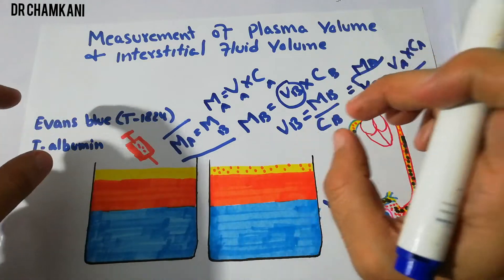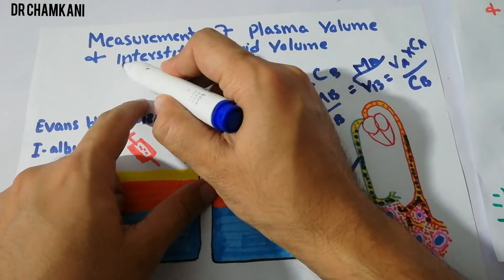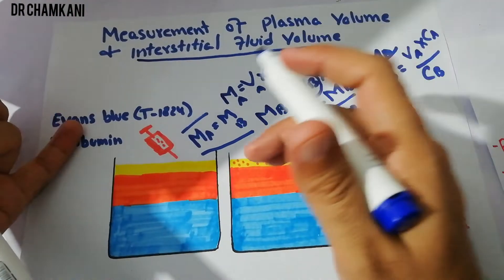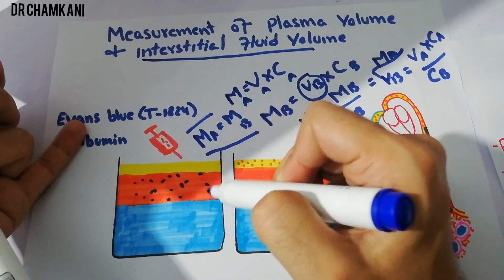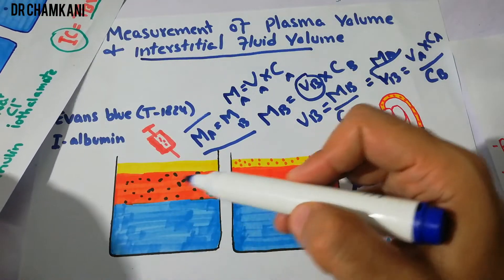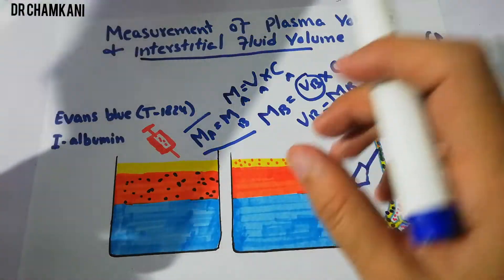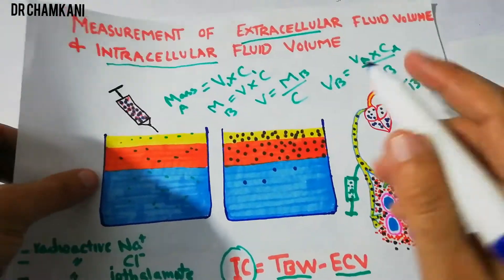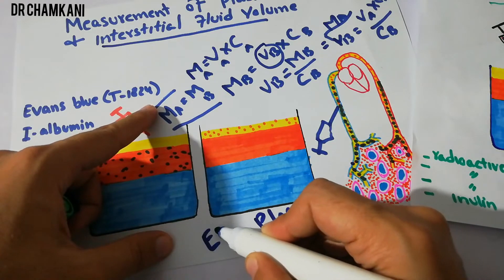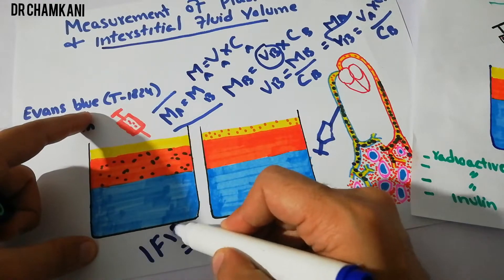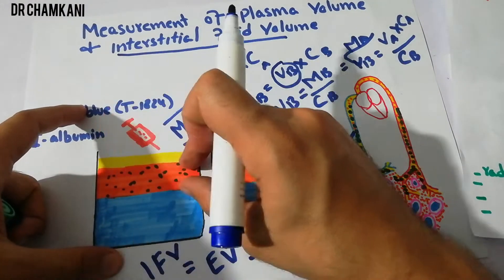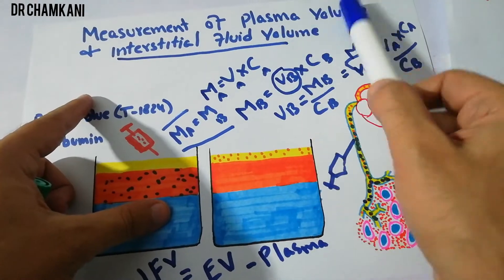Once we have determined the plasma volume, we can also calculate the interstitial fluid volume. Since there is no indicator that distributes exclusively into the interstitial fluid without also entering the plasma or intracellular fluid, we calculate interstitial fluid volume indirectly: Interstitial Fluid Volume = Extracellular Fluid Volume − Plasma Volume.